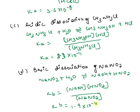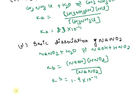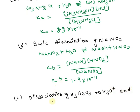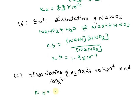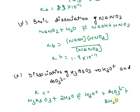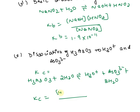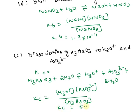In the next part, we write down the dissociation of H₃AsO₃ to H₃O⁺ and AsO₃³⁻. The equation is: H₃AsO₃ + 2H₂O → H₃O⁺ + AsO₃³⁻ + 2H₂O. The Kc expression is the concentration of H₃O⁺ times the concentration of AsO₃³⁻, upon the concentration of H₃AsO₃. The Kc value is 5.5 × 10⁻¹⁰.